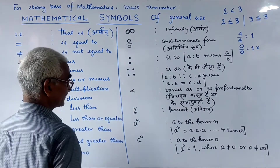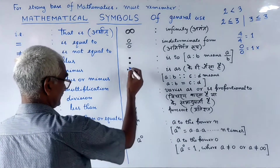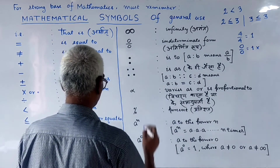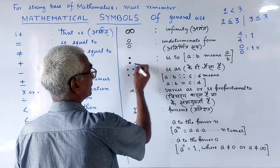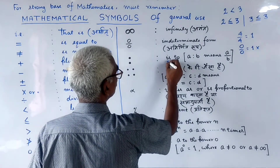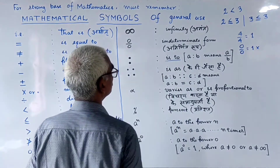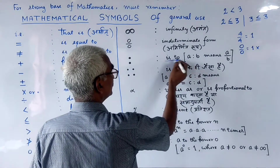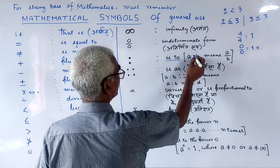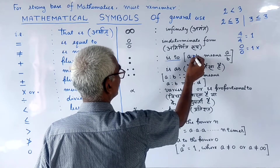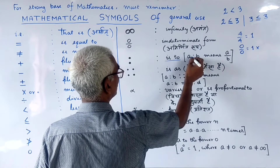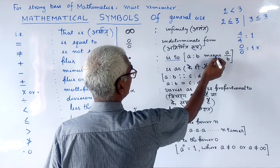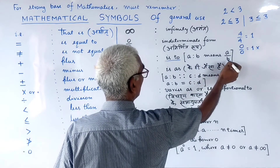This is the symbol for proportion. We call it 'is to'. The symbol for ratio is written as a colon, and we call it 'a is to b', which means a divided by b.